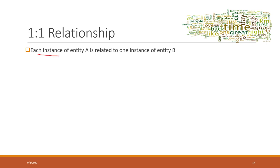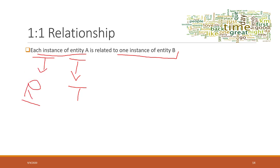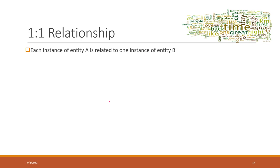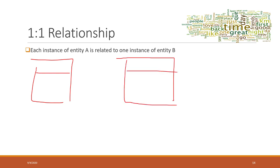One-to-one relationship is probably the simplest one. It basically means that each instance of entity A is related to one instance of entity B. Here, entity refers to the tables and instance refers to the rows. For example, we have a teacher table representing the teacher entity, and each row represents one specific teacher.